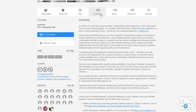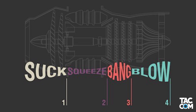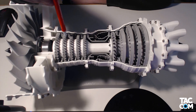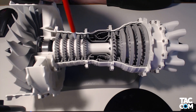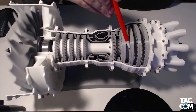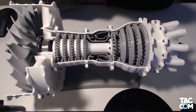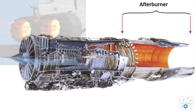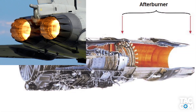Let's start with jet engine basics. 'Sucks, squeeze, bang, blow' is the common description of how these work. The fan sucks air in, the compressor squeezes or compresses the air, the combustor adds fuel and ignites the air, and then the high energy air is blown through the turbine and out the back of the engine. You could also add an augmenter or afterburner section to the end, but most commercial engines don't have one of those.